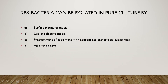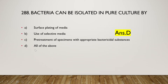The next question is: bacteria can be isolated in pure culture by (A) surface plating of media, (B) use of selective media, (C) pre-treatment of specimens with appropriate bactericidal substances, or (D) all of the above. The right answer is option D — all of the above are used for isolation of pure culture.